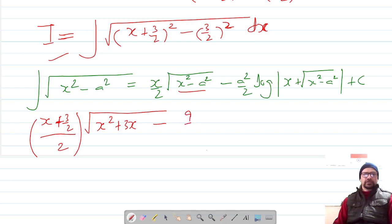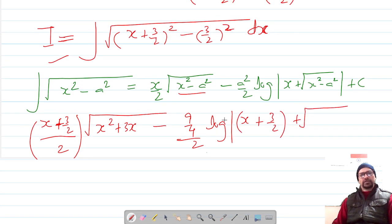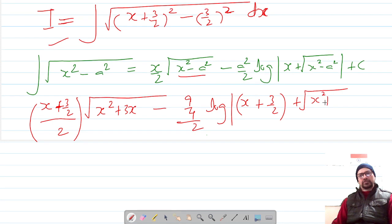But this is 9 by 4 by 2 log of x which is x plus 3 by 2 plus 3 by 2 plus under root x square minus a square which was x square plus 3x plus c.